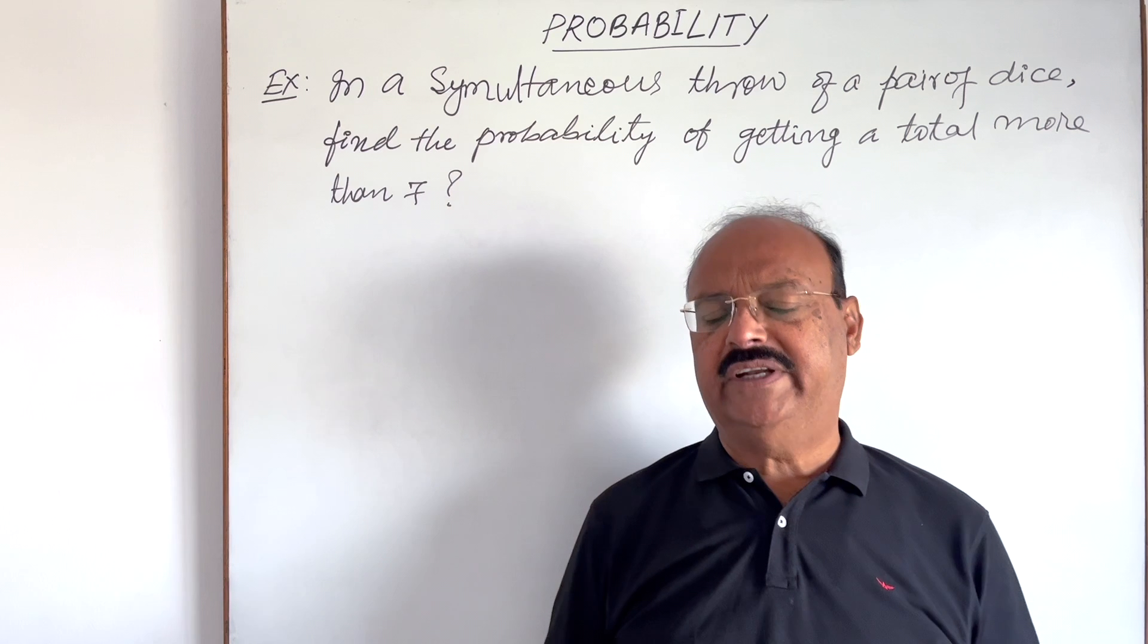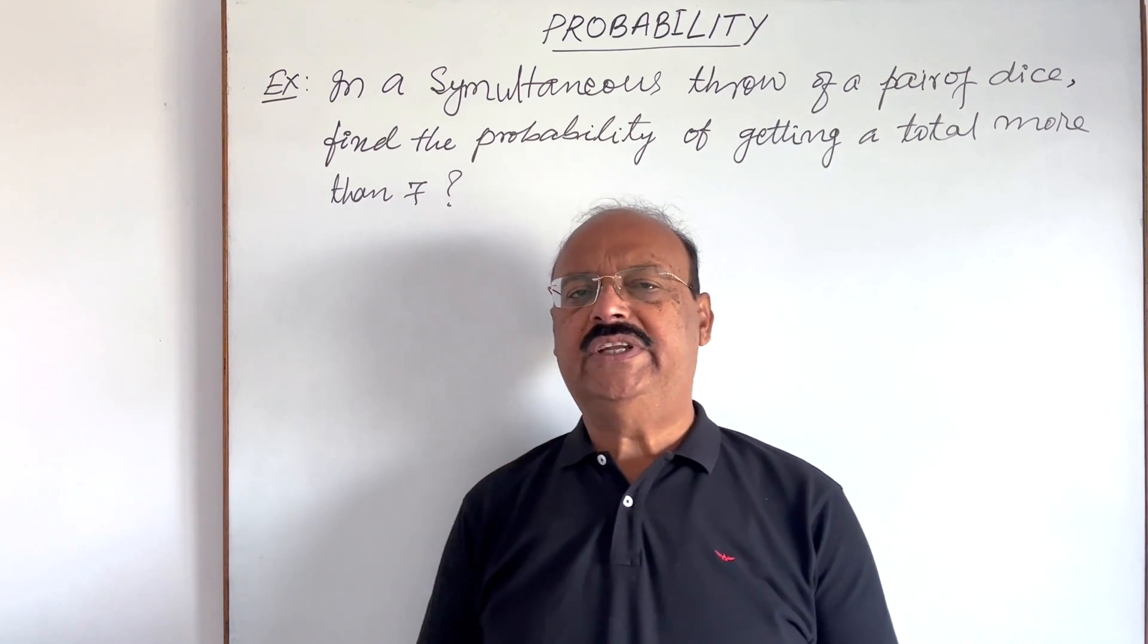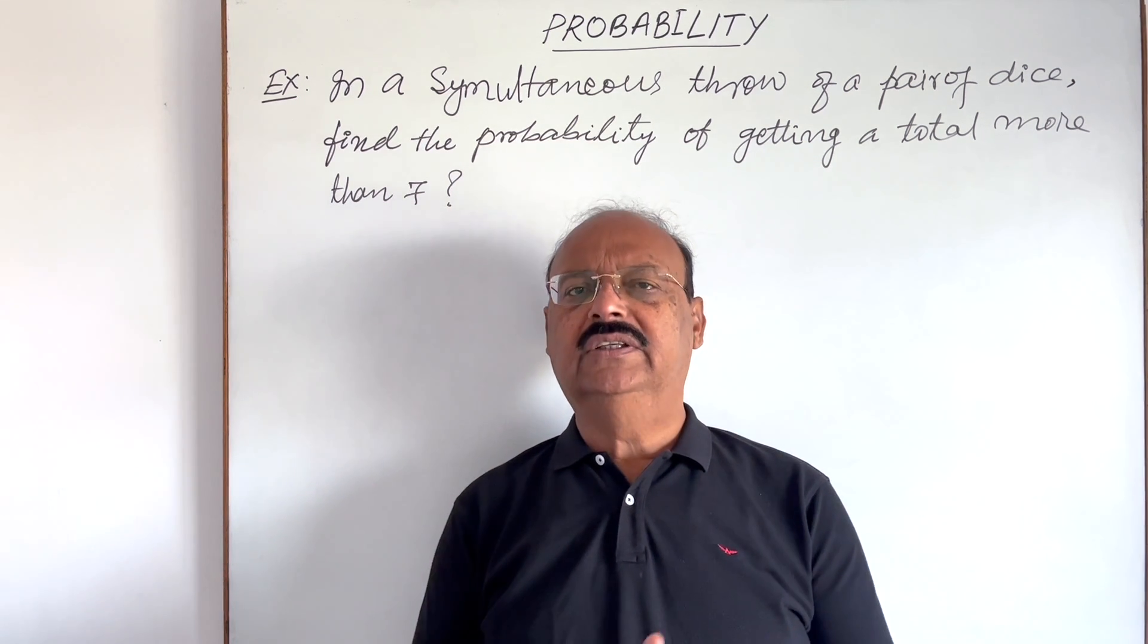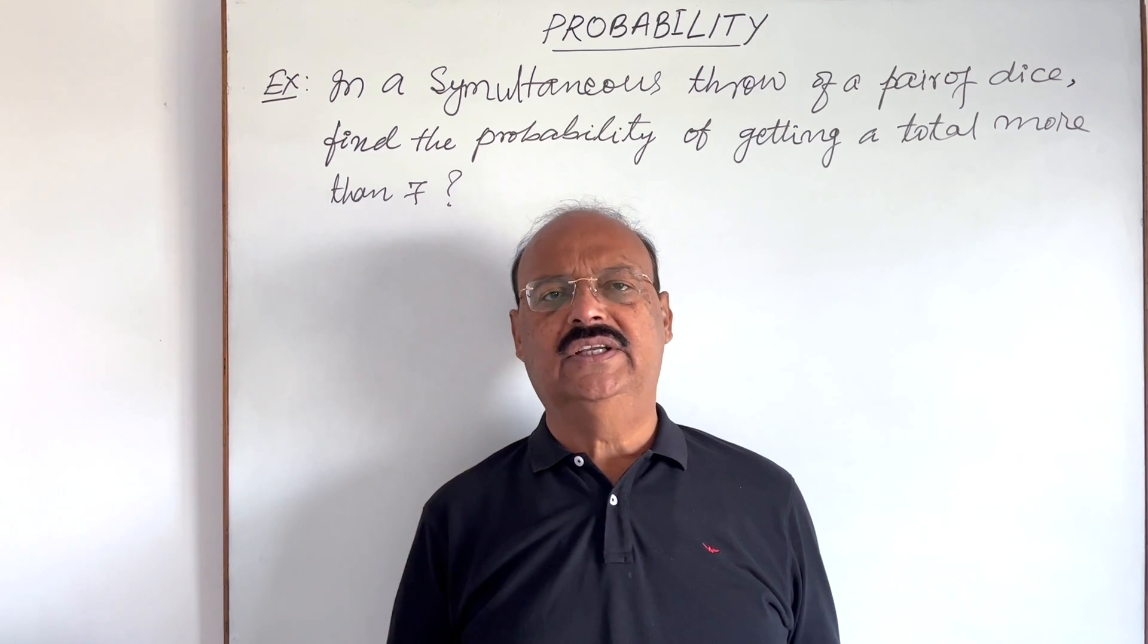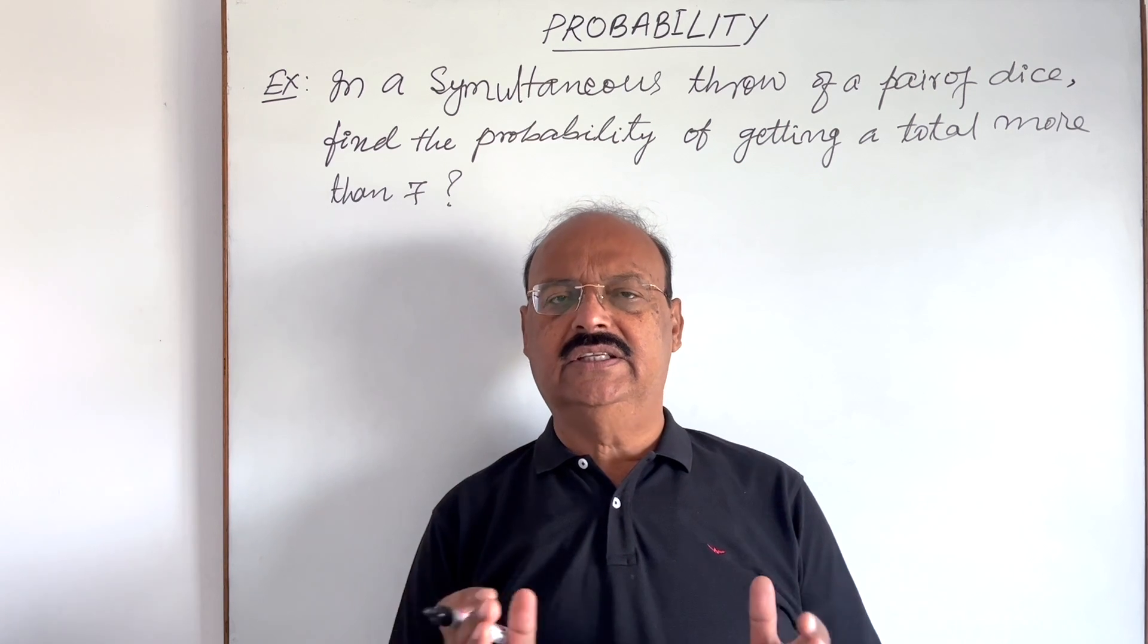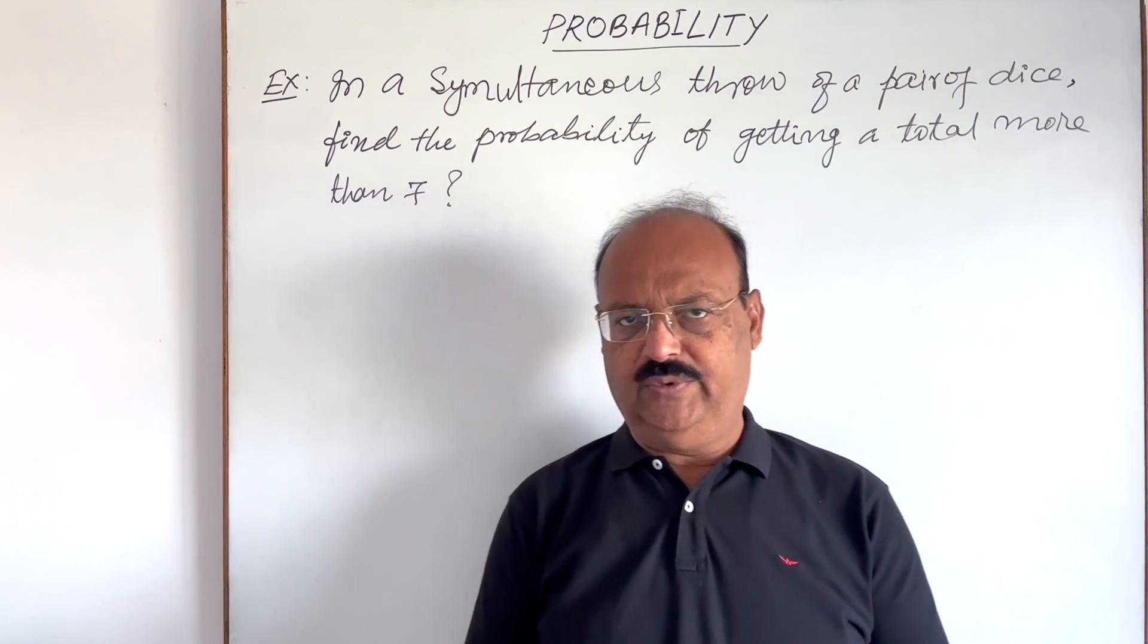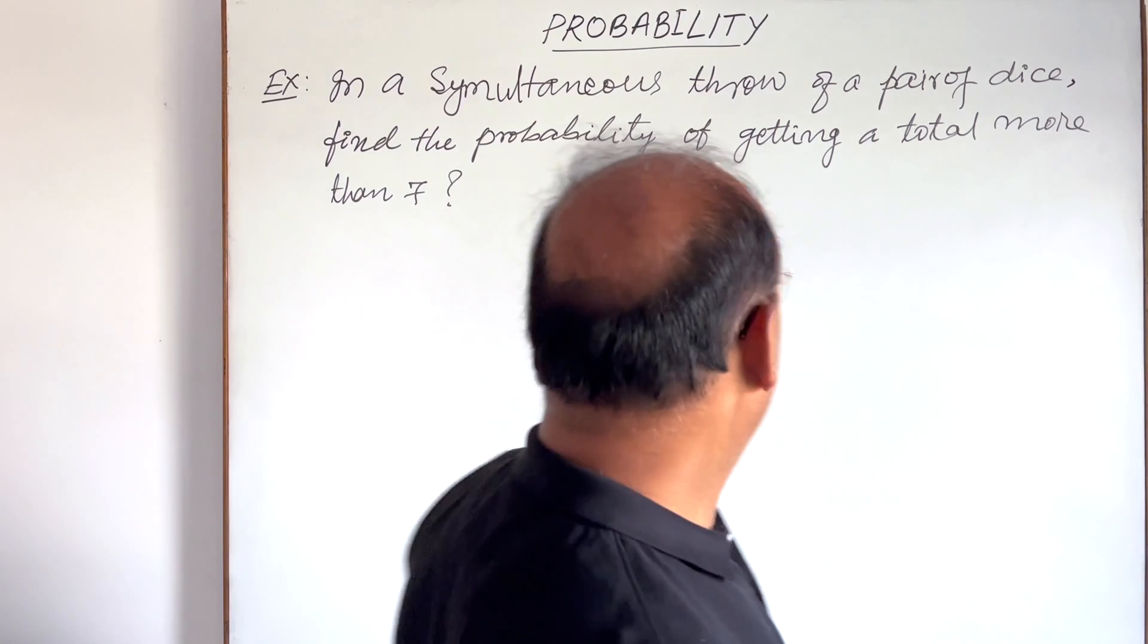So if two dice are thrown simultaneously, total possibility of outcomes may be 36. Six from one dice and six from another dice. So we'll multiply six and six, that will be total 36. So let us see here the solution.